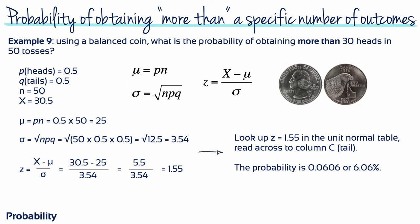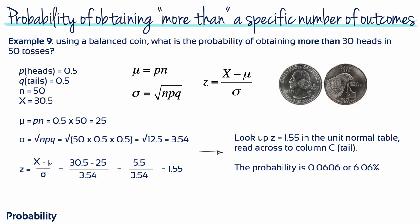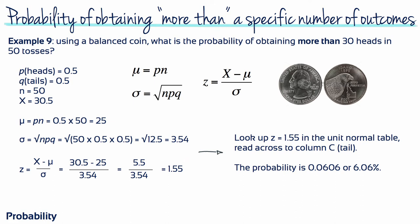Next, we find the mean and standard deviation. The mean equals P times N, or 0.5 times 50, which equals 25. The standard deviation is the square root of N times P times Q, which equals the square root of 12.5, which is 3.54. Then we calculate a z-score: 30.5 minus 25 divided by 3.54, which equals 1.55. Looking up this z-score of 1.55 in the unit normal table and reading column C, the probability is 0.0606, or 6.06%.